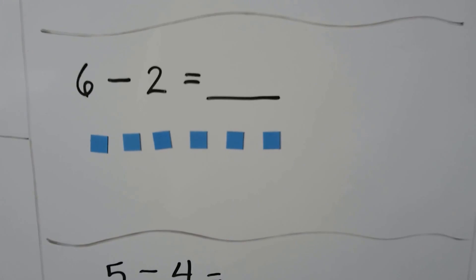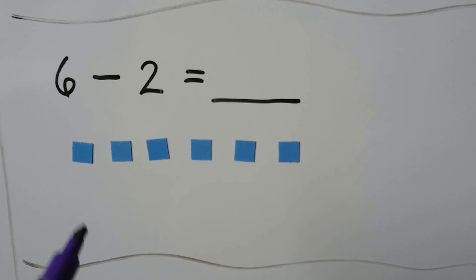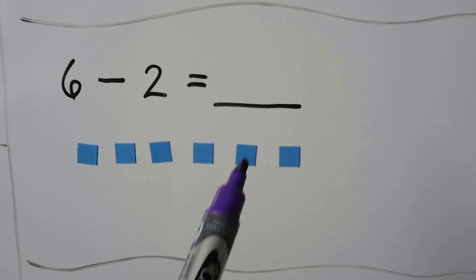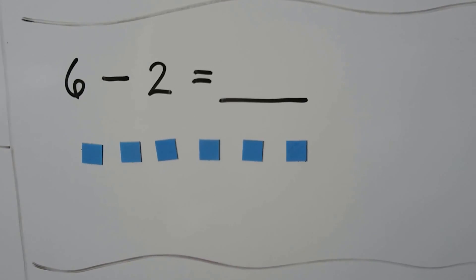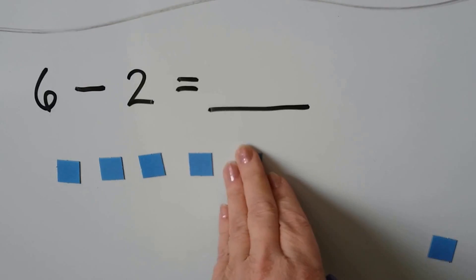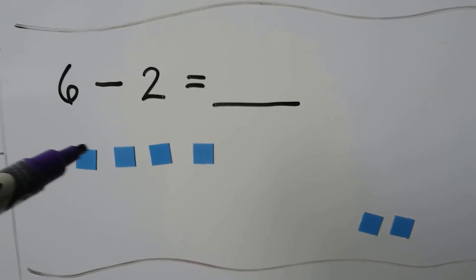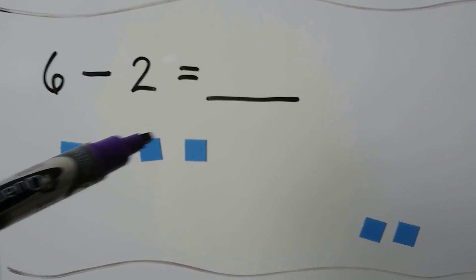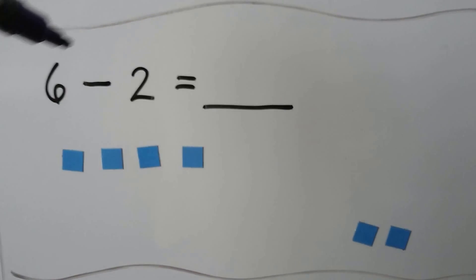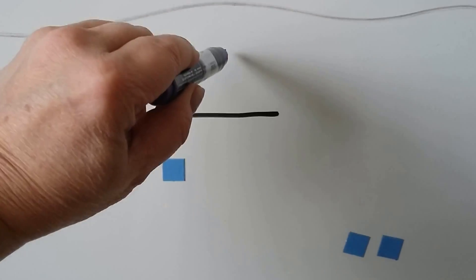Six minus two. We have six blue squares: one, two, three, four, five, six. We take away two: one, two. We have one, two, three, four squares left. Six minus two is equal to four.